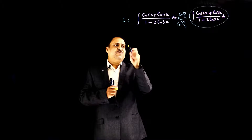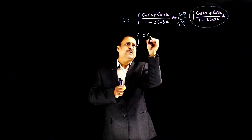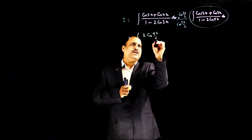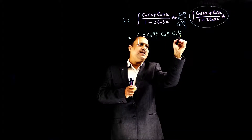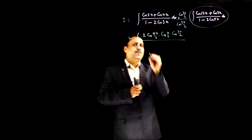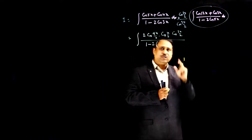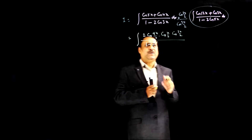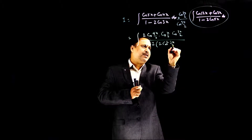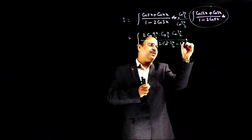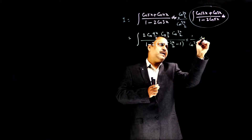Now, while applying this, we use the formula cos C + cos D = 2 cos((C+D)/2) cos((C−D)/2). So cos5x + cos4x = 2 cos(9x/2) cos(x/2) into cos(3x/2), divided by: for the denominator, we use cos2θ = 2cos²θ − 1. So 1 − 2cos3x becomes 2cos²(3x/2) − 1 expressed as cos3x using the half-angle, and this is multiplied by cos(3x/2). Write dx as it is.